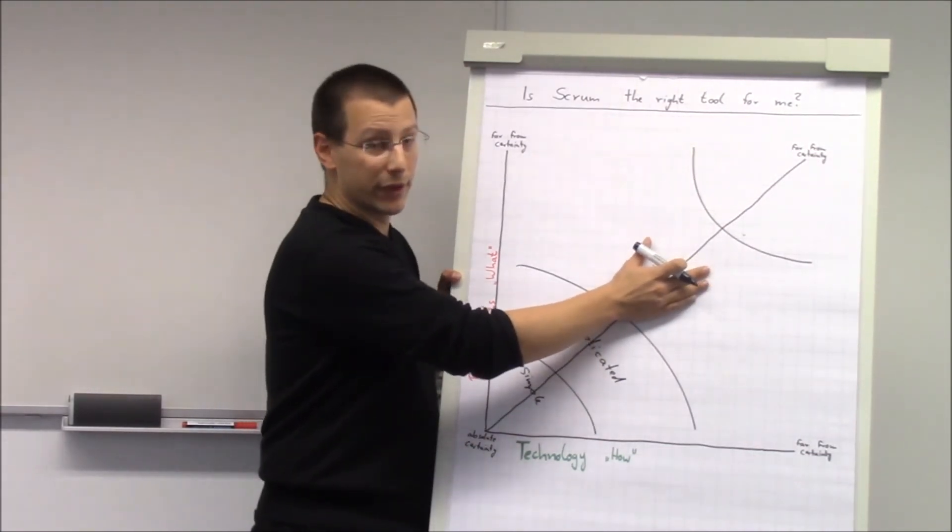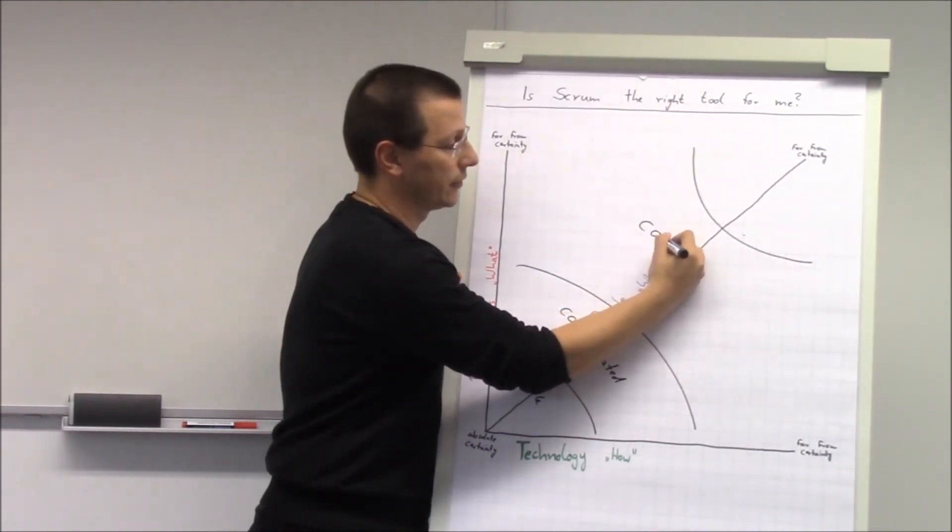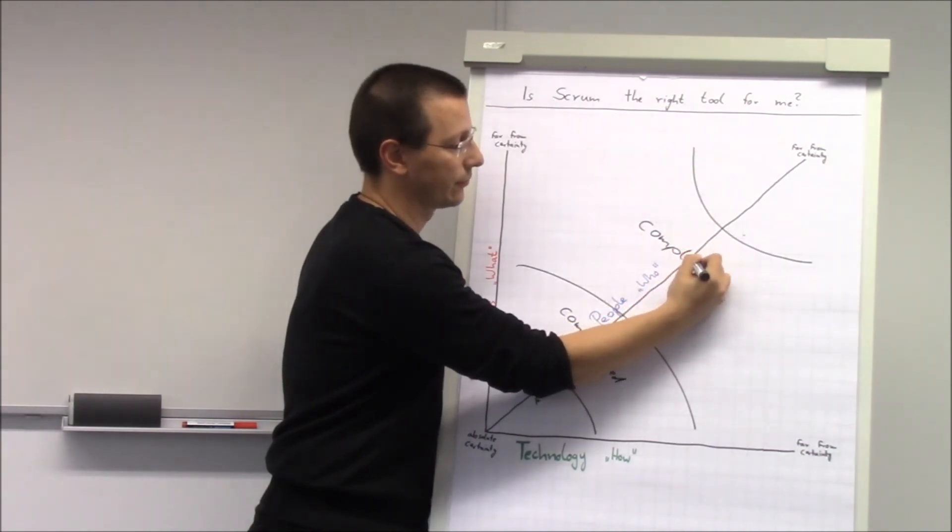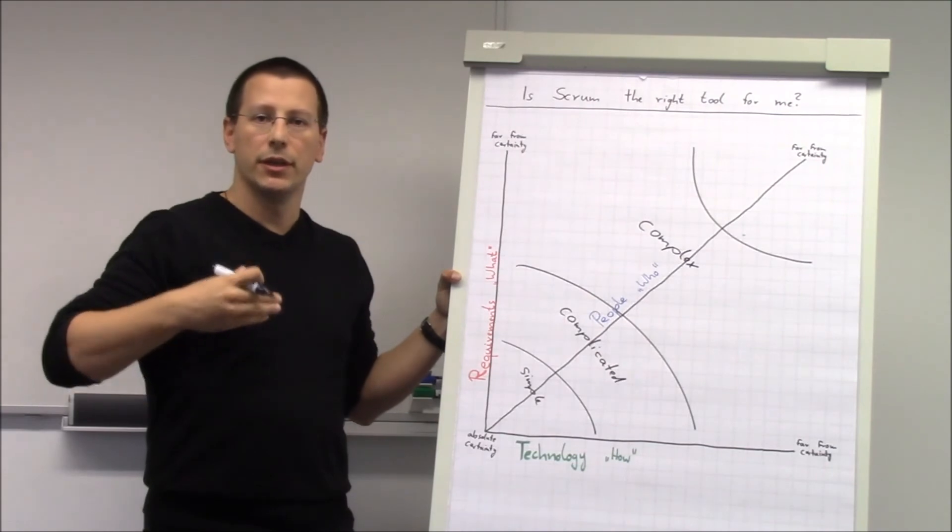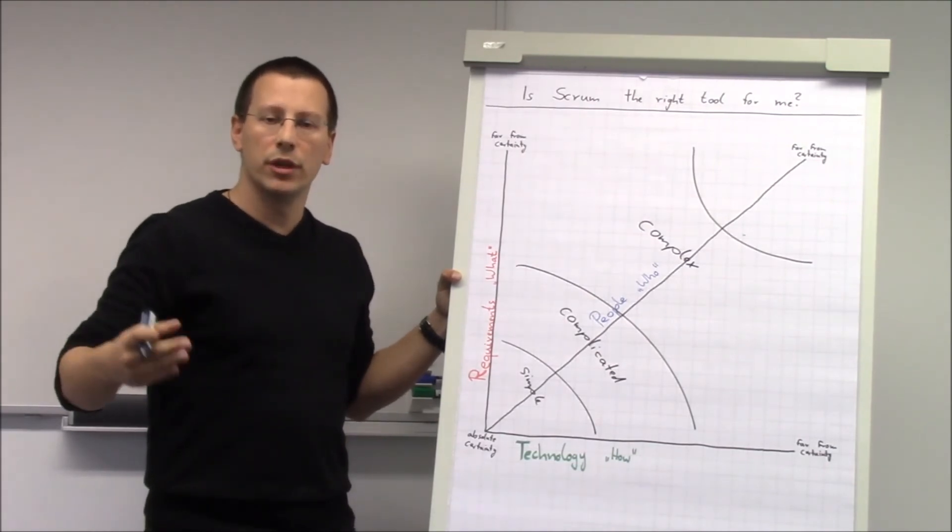The third dimension is called complex. It is described as more is unknown than known.